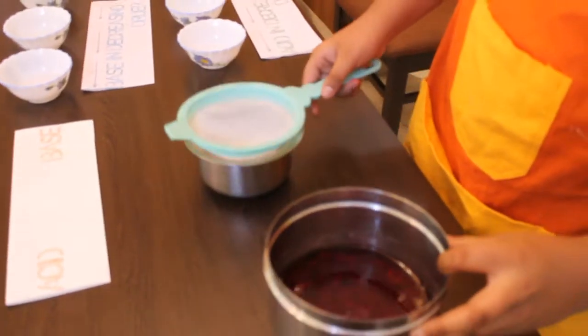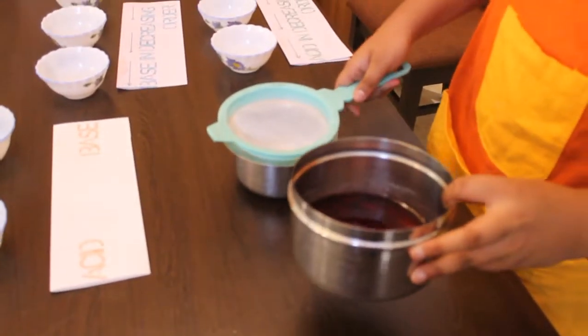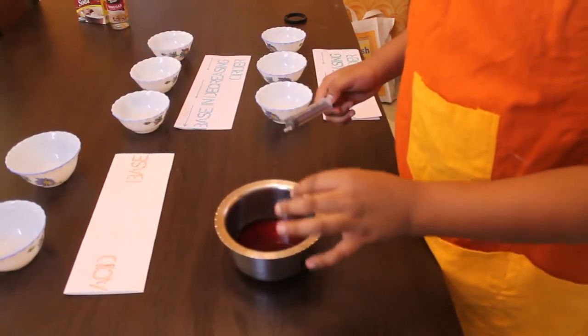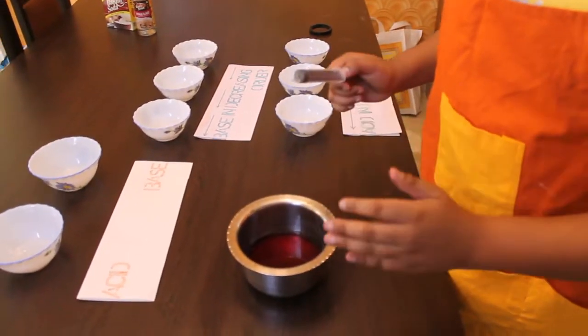So now I am using a strainer to filter. Now here I have a syringe and here we have the beetroot based natural indicator which is ready. It is a very concentrated solution.